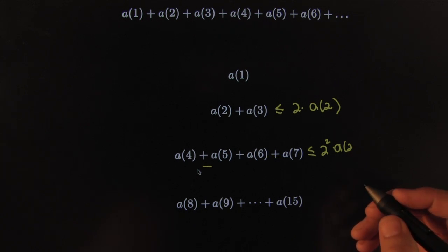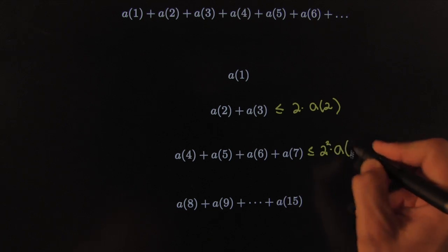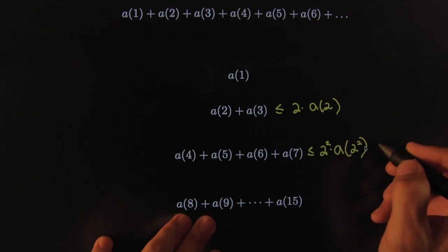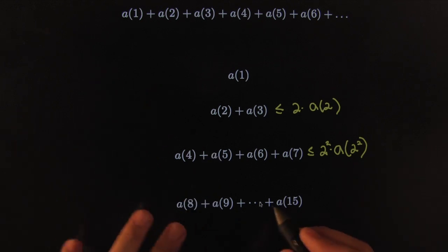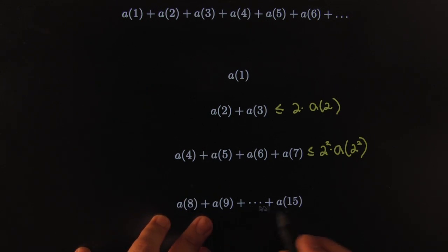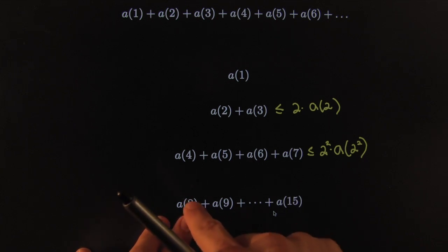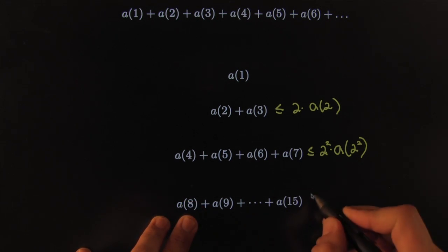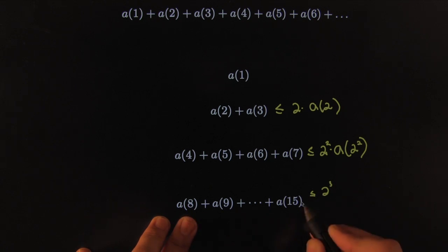Let's do that in a neater way. So this is less than or equal to 2 squared times a of 2 to the second. Same thing here. We've got eight of them. And these are all getting smaller. The hypothesis is that your sequence is decreasing. So the first one is the biggest one. So the entire sum cannot be worse than 2 to the third, which is the number of items that I've got. From 8 to 15, there's 16 of them.